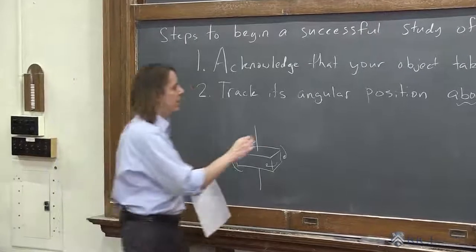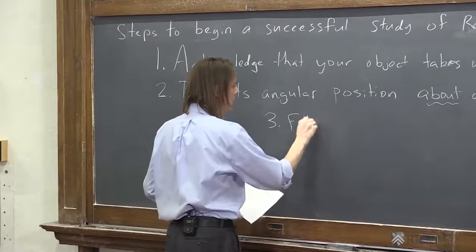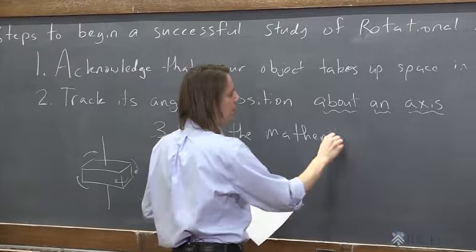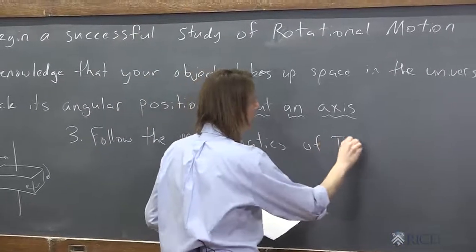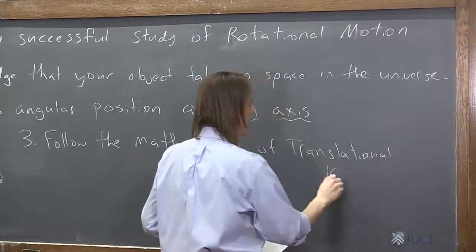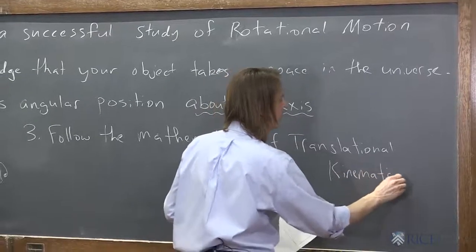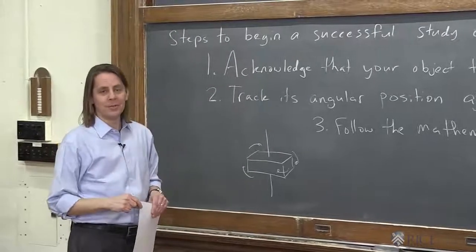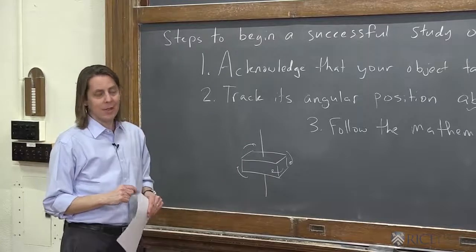And then finally, three, we're going to follow the mathematics of translational kinematics. We spent a lot of time thinking very carefully about all those equations and where they came from and how they're related to calculus. We're not going to do that again. We're just going to show you how to write them for rotational coordinates and rotational motion. And you'll see that they mathematically are identical, exactly the same.